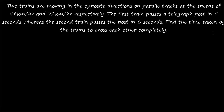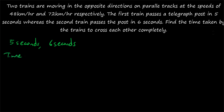Now question number 3. Two trains are moving in opposite directions on parallel tracks at speeds of 48 km/h and 72 km/h respectively. The first train passes a telegraph post in 5 seconds, whereas the second train passes the post in 6 seconds. Find the time taken by the trains to cross each other completely. We use the shortcut formula: time = (T1·x + T2·y) / (x + y), where x and y are the ratio of the speeds.